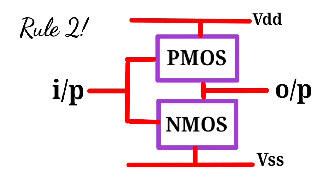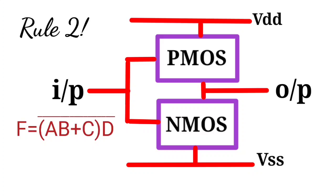In our case, the function is AB plus C into D, the whole bar, and the number of inputs is four: A, B, C, and D.